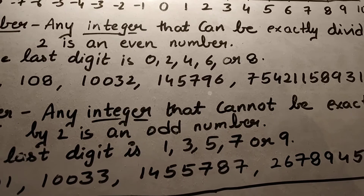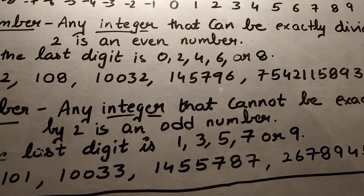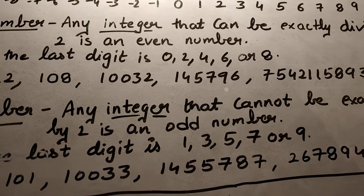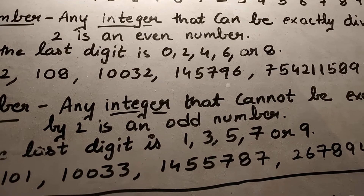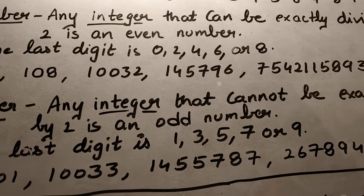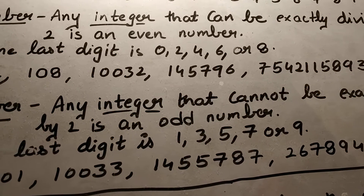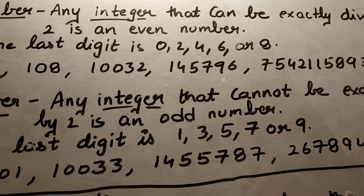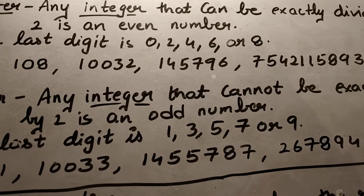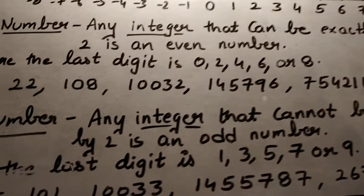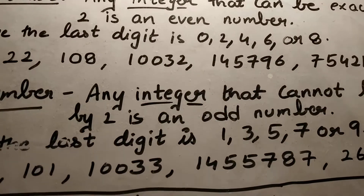Any integer that can be exactly divided by two is an even number. For example, if you divide four by two, two twos are four, so it is exactly divisible by two, making four an even number.